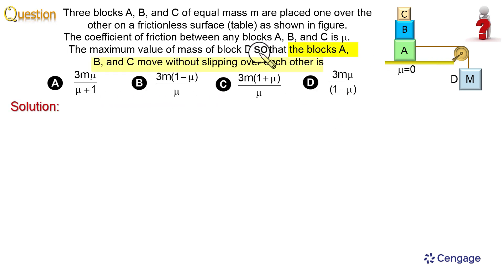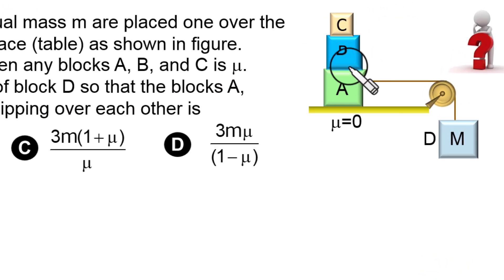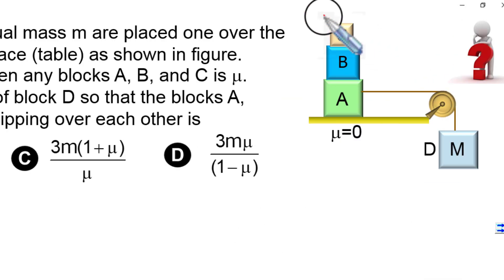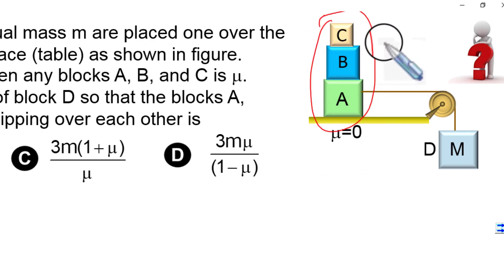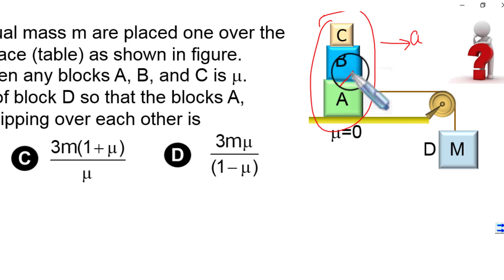In this question, this line is important: blocks A, B and C move without slipping over each other. It means the system of blocks A, B, C is moving together — there is no slipping between A-B and B-C. If the system is moving together, it should have a common acceleration, small a, in the rightward direction. The friction between B-C and A-B should therefore be static in nature.